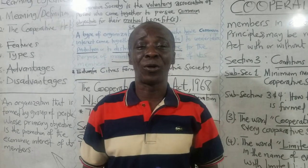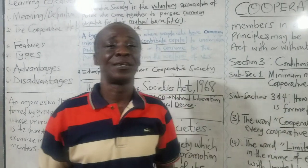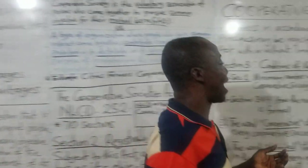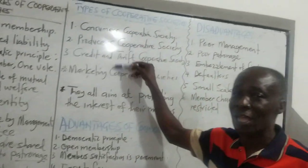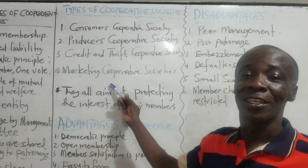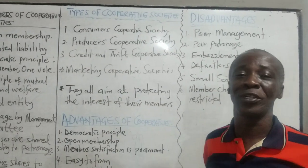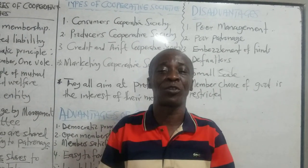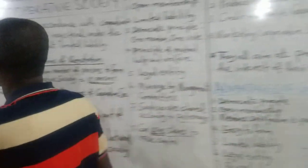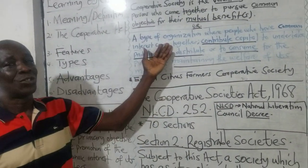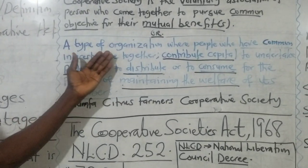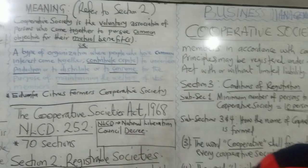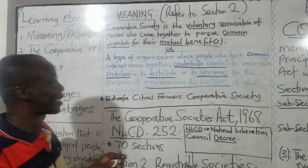Cooperative society is about the members' welfare. No matter the type of cooperative society you form, you establish it purposely to pursue a common objective, and it is parallel to members' welfare. Whatever surplus or profit comes out of it, the members will share, depending on the type of society. There is another way we can also define cooperative society. It is a type of organization.